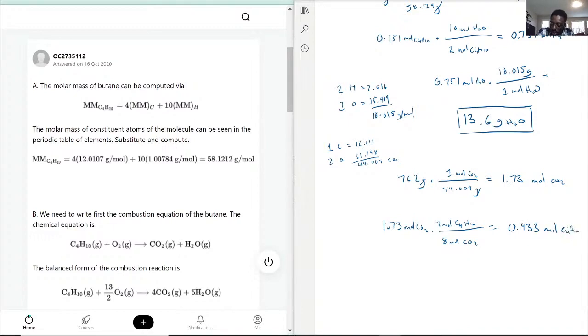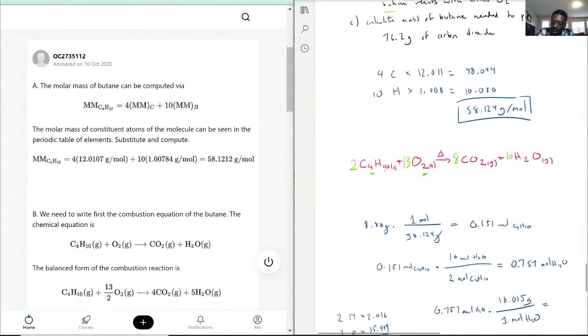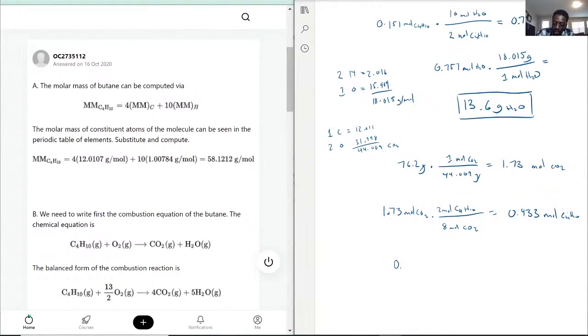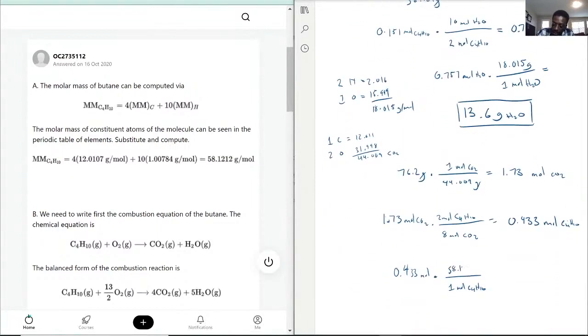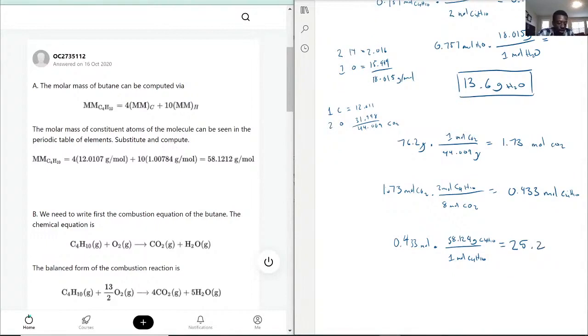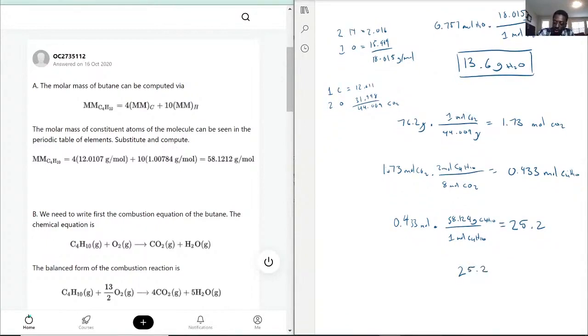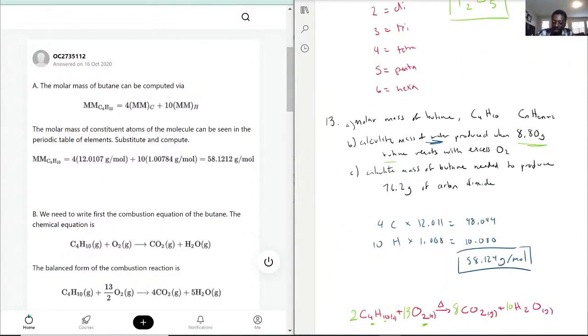And now the last part is we refer back to our molar mass up here. So to get from moles to grams, it'll be 0.433 moles times one mole of C4H10 is equal to 58.124 grams of C4H10. And now what do we get? 58.124 times that value, 25.2 grams of C4H10 needed to produce 76.2 grams of carbon dioxide.